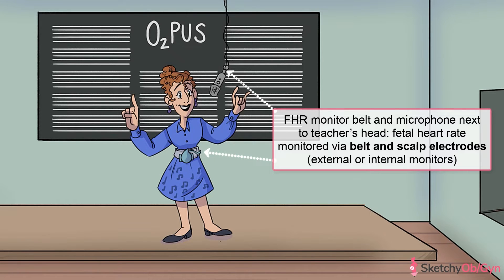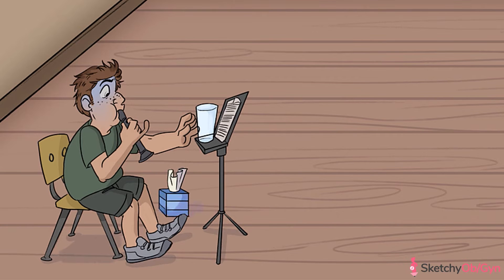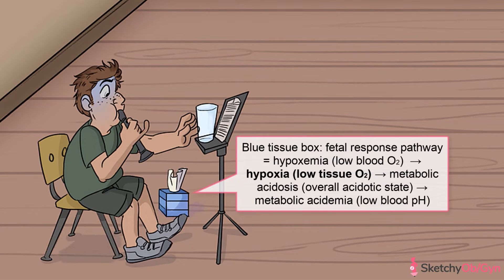Now that we've established that fetal heart tracings reflect fetal oxygenation status, let's delve a little deeper into the pathophysiology behind fetal hypoxemia. Hypoxemia means low blood oxygen levels, symbolized by a kid turning blue from not taking enough breaths while playing the recorder. This in turn causes low tissue oxygen levels, symbolized by a blue tissue box, which helps you remember that hypoxia comes after hypoxemia.